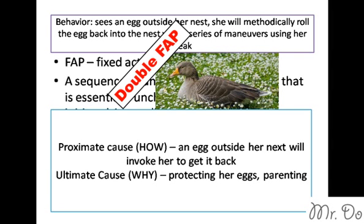The gray lag goose also has what is called a double FAP. She has an FAP of rolling eggs back into her nest, and then a second FAP: once she rolls the egg back, if she incubates it and recognizes it as her own egg, she will incubate it. But scientists tried giving her a doorknob or a fake egg, and she would not incubate it. That is her second FAP that occurs after she rolls the object back.